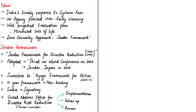The news article discusses India's timely response for Cyclone Fani, which was commended by the UN Agency for Disaster Reduction. The agency praised the Indian Meteorological Department's almost pinpoint accuracy of early warnings of the cyclone. This warning helped authorities conduct a well-targeted evacuation plan, minimizing the loss of life by moving more than 1 million people into storm shelters.